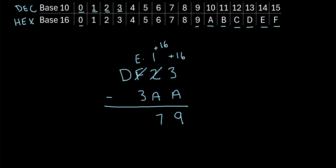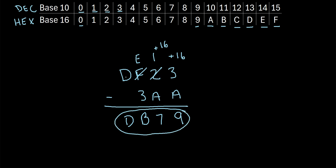Moving on to the next column, we have E minus 3. In the hexadecimal system, E is the same as 14, so we have 14 minus 3, which is 11. And 11 in the hexadecimal system is represented by a B, so we write a B. And lastly, we have D minus nothing, so that stays as a D. So our final answer is DB79. DF23 minus 3AA in the hexadecimal system gives us DB79.